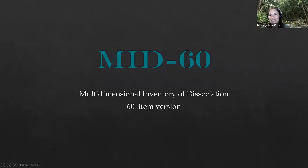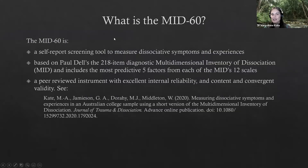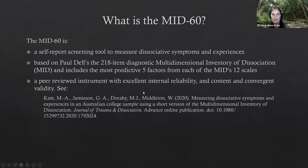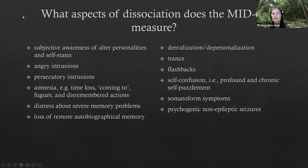The MID-60 is a self-report screening tool for measuring dissociative symptoms and experiences. It's based on the parent instrument — a 218-item diagnostic instrument. I spoke to Paul Dell about creating this, looking at the five most predictive factors from each of the MID's 12 subscales. It's peer-reviewed, with excellent internal reliability, content, and convergent validity. The scales are nearly identical to the MID, with only one change — a mixed dissociative symptoms scale changed, and psychogenic non-epileptic seizures became a standalone item.